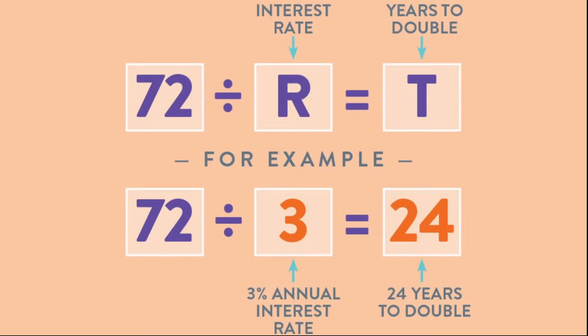With regard to fees that eat into investment gains, the Rule of 72 can demonstrate the long-term effects of those costs. A mutual fund that charges 3% in annual expense fees will reduce the investment principal to half in around 24 years. Similarly, a borrower who pays 12% interest on a credit card or any compounded-interest loan will double the amount owed in 6 years.